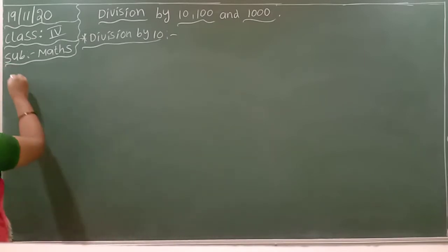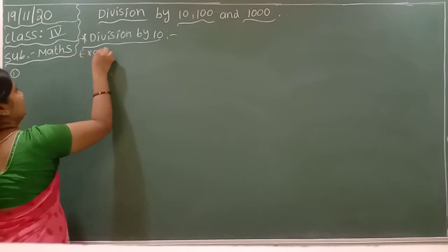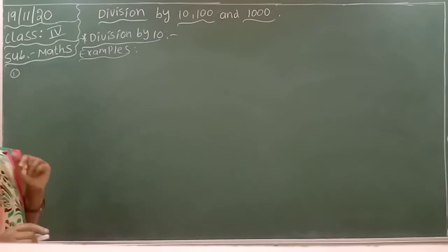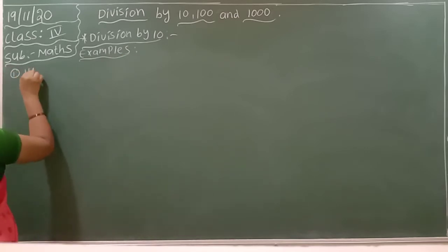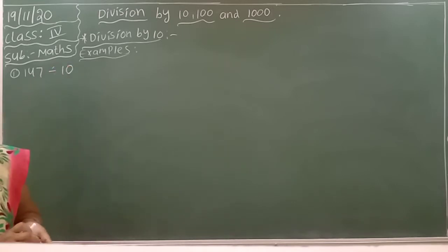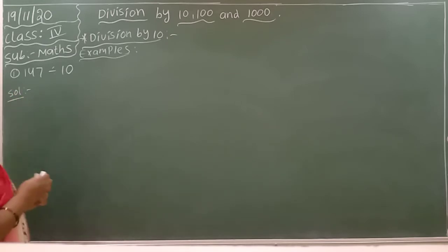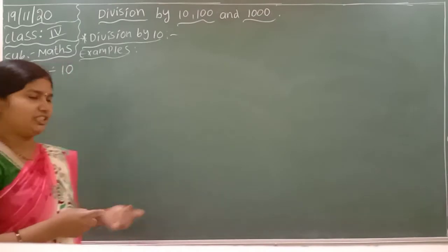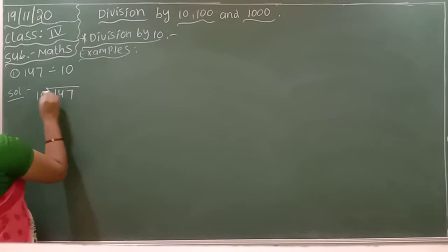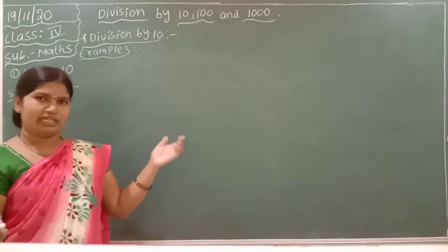In division by 10, I am taking the first example: 147 divided by 10. Here we have to do the normal division. Before going to do the problem, we have to arrange the given number. So we write 10 outside and 147 inside the division bracket. Everyone knows the 10 table, so no need to write the 10 table — we can do it directly.